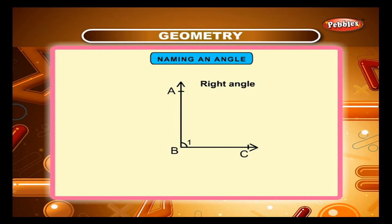Remember, while naming an angle, the vertex is always in the center. For example, in angle ABC, B is the vertex.